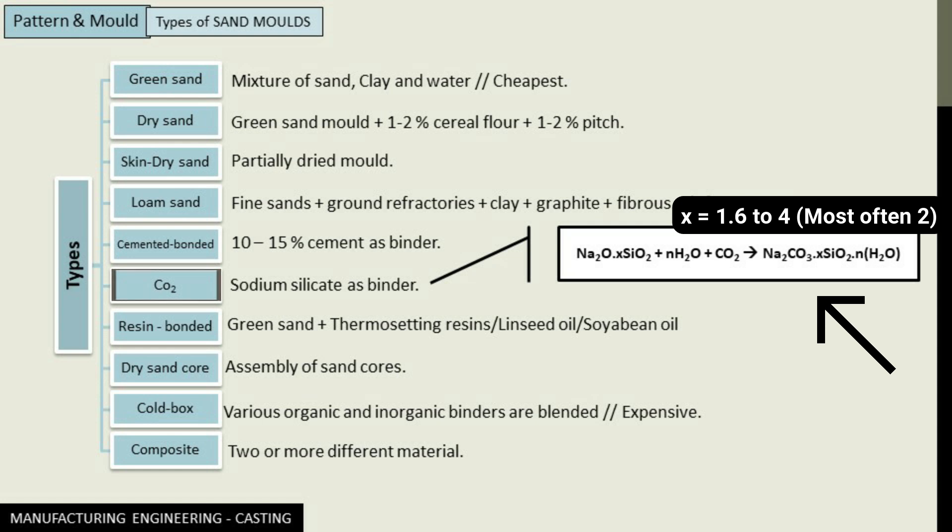Here x is near about 1.6 to 4, and most often 2. This particular reaction is very rapid and takes about a couple of minutes, which is comparatively very much less than the several hours needed to produce a dry sand mold. Such kinds of CO2 molds can be used for producing very smooth and intricate castings.